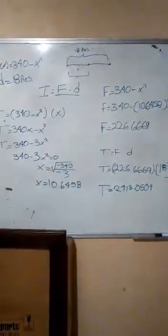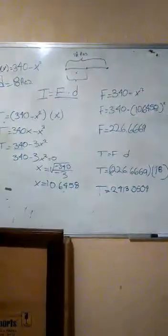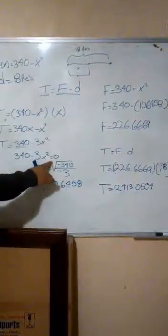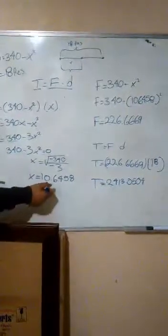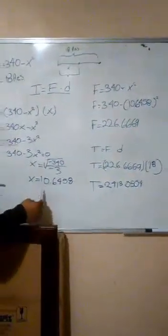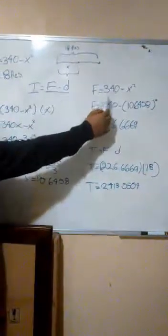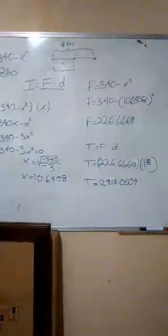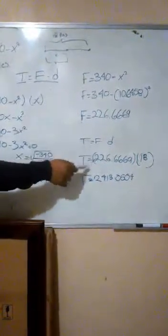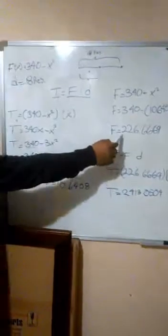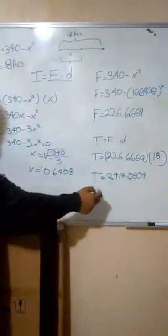Realizando la aplicación de la derivada tenemos que nos da 340 menos 3X al cuadrado. Esto lo igualamos a 0 para luego despejar X y así tener el valor de X. Una vez que tengamos el valor de X sustituimos en el dato dado para sacar fuerza. Una vez que sacamos fuerza, sacamos el trabajo total: sustituimos fuerza y la distancia que es el dato dado. Efectuamos la multiplicación y tenemos como resultado esto.